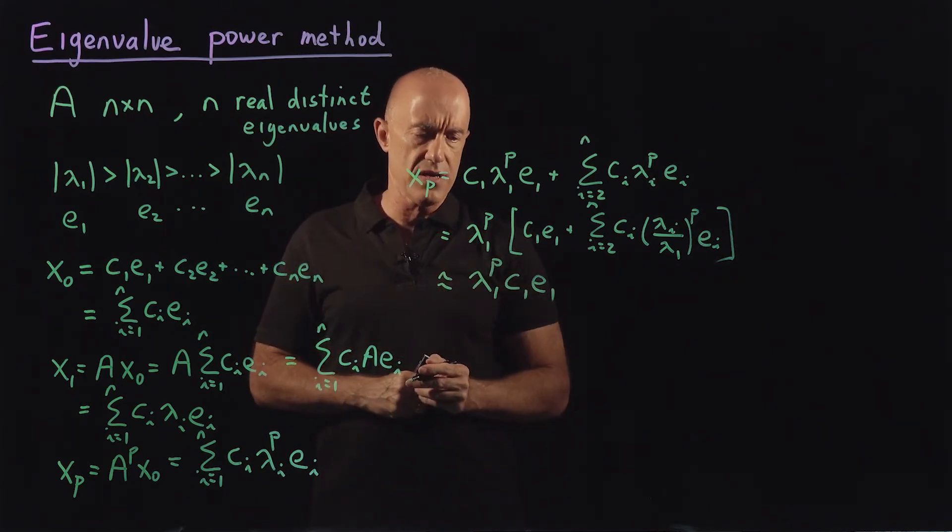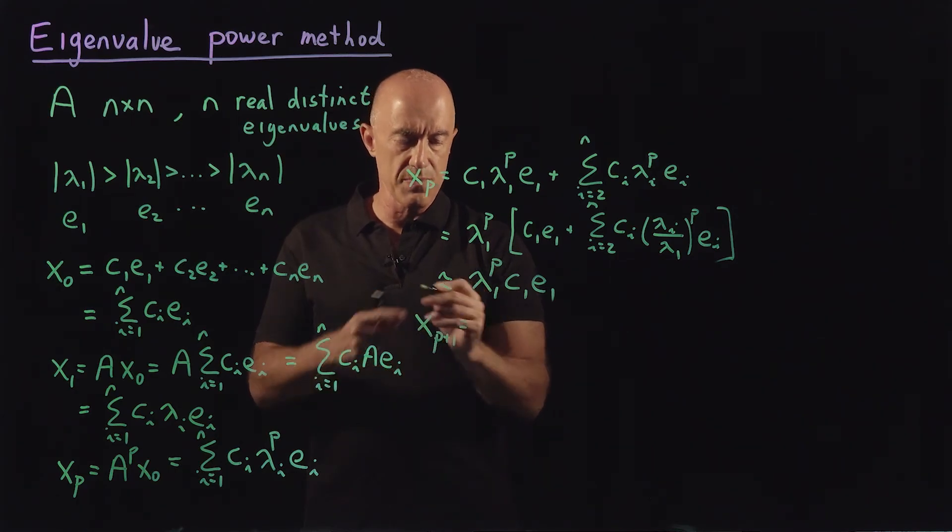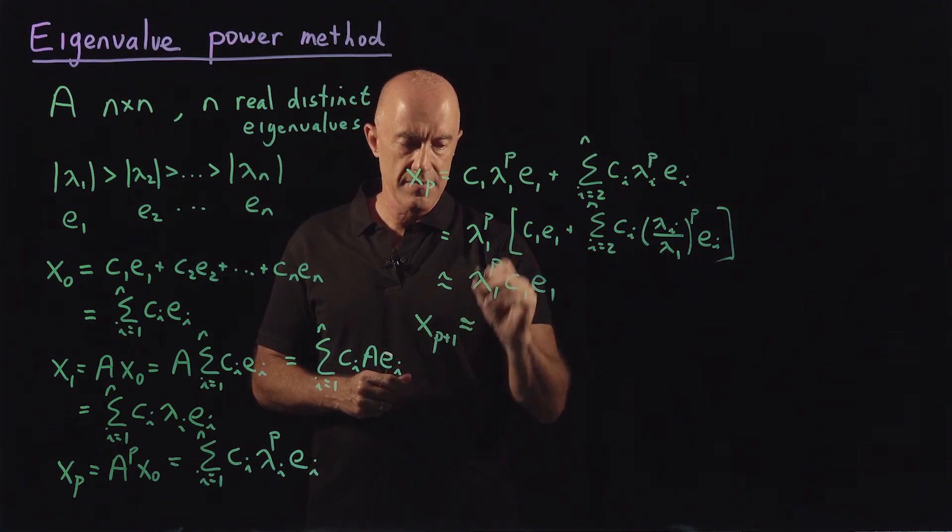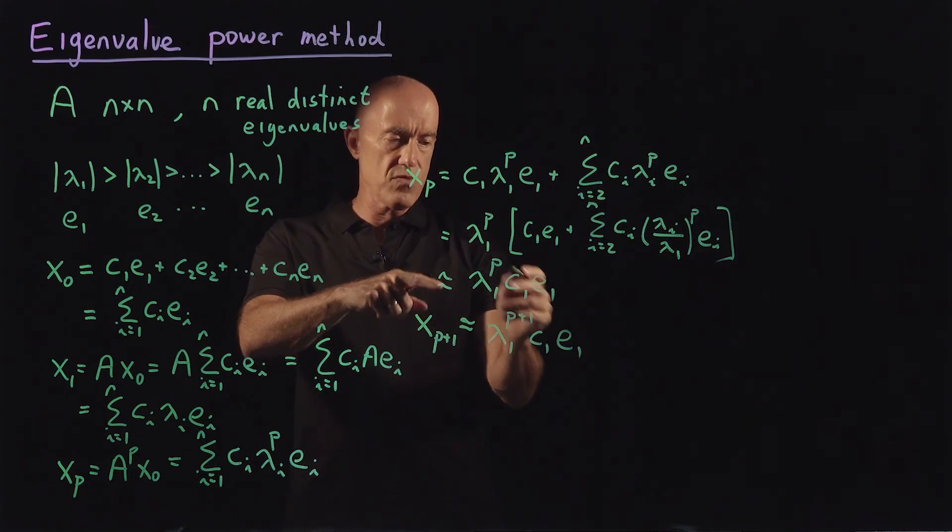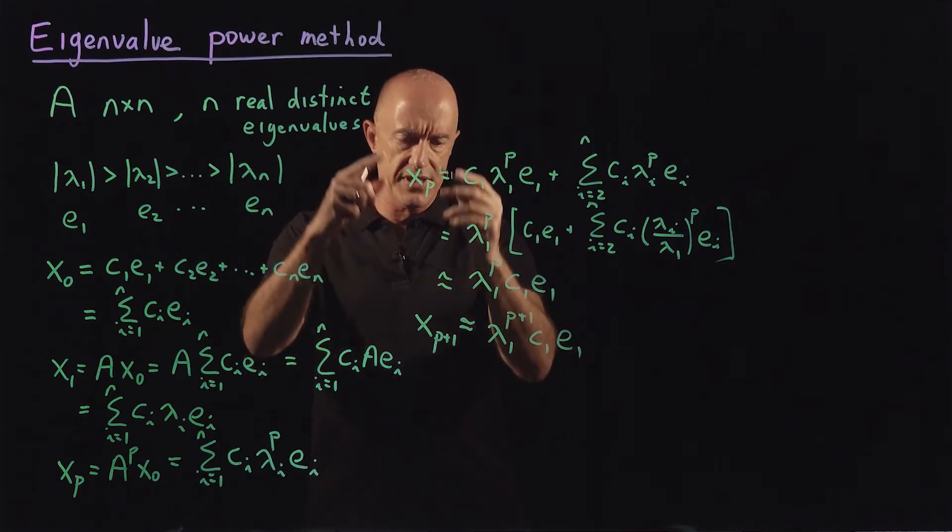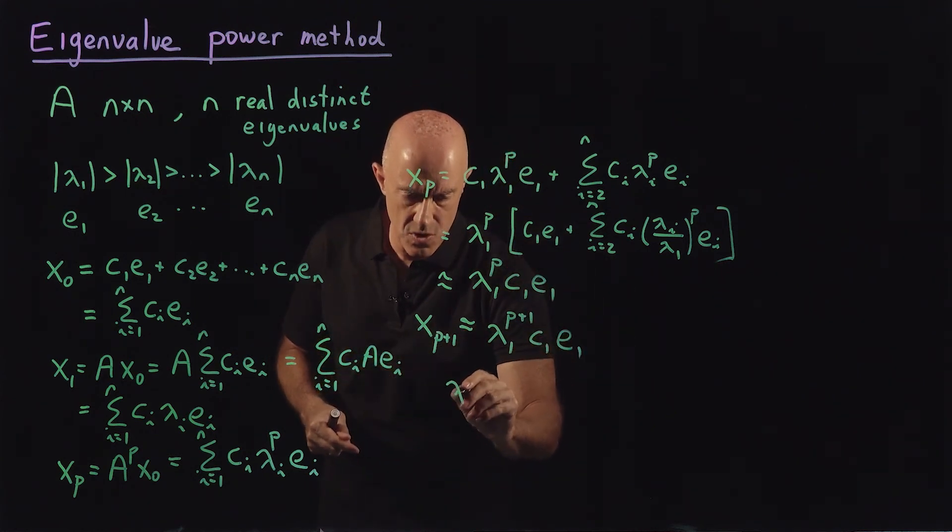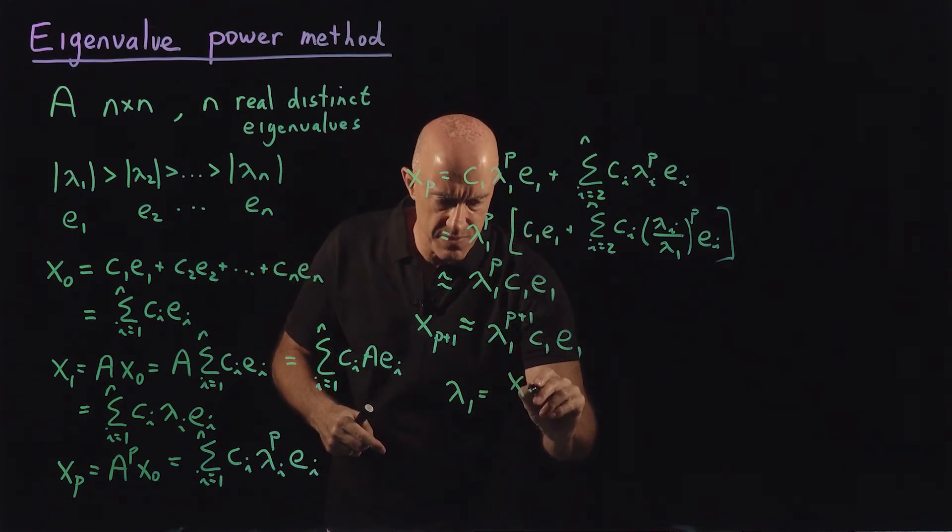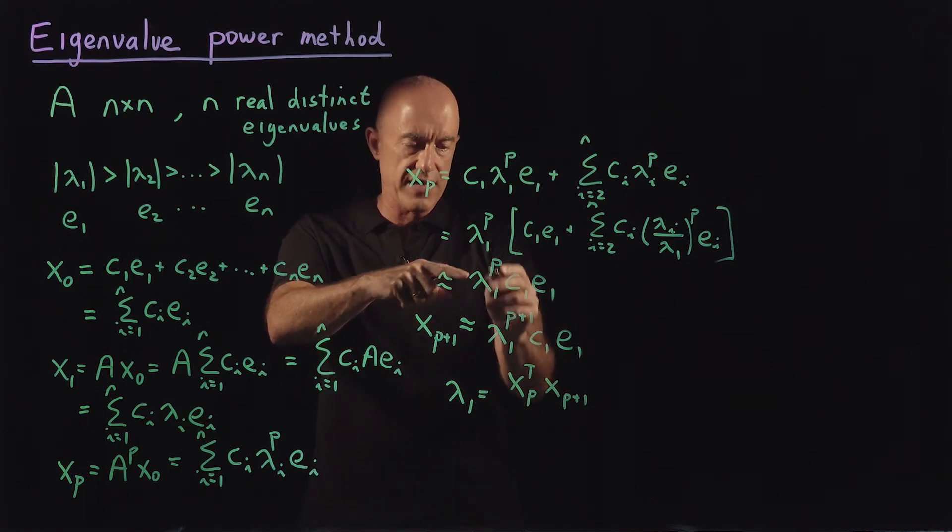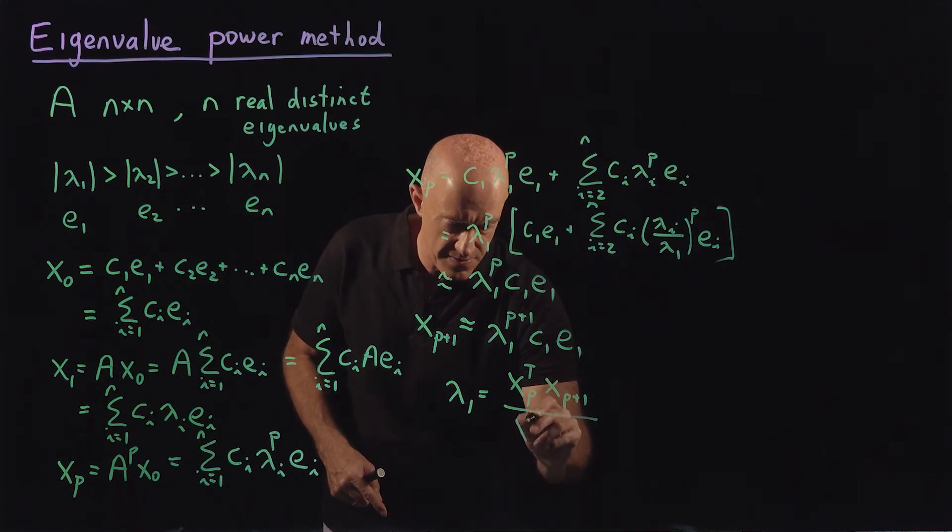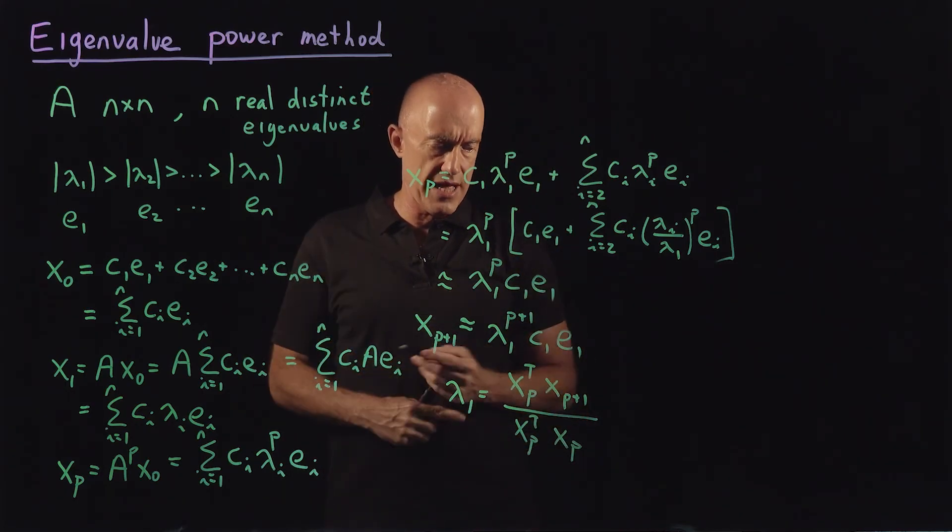Okay, so how can we pick out lambda one if we wanted to solve for lambda one? Well, if we go one more, so we go x to the p sub p plus one, multiply by a again, this is approximately lambda one to the p plus one c one e one. And we want to kind of clear the eigenvector and the c one. So we can do the following trick. We can solve for lambda one. Lambda one, we can take x p transpose and multiply by x p plus one, and simply divide by x p transpose times x p. And you'll see that if you do this, you'll just pick out lambda one.